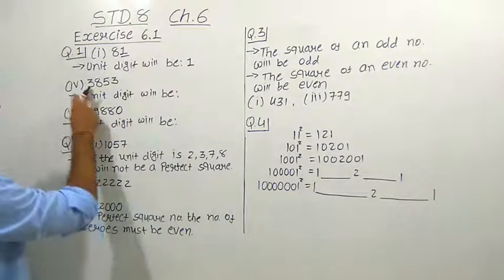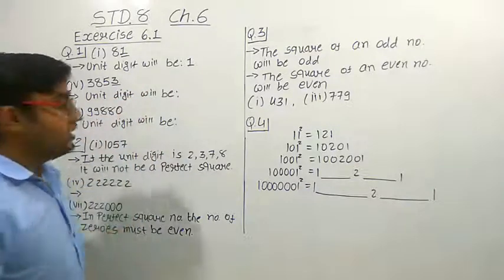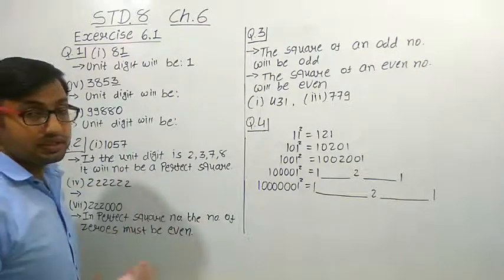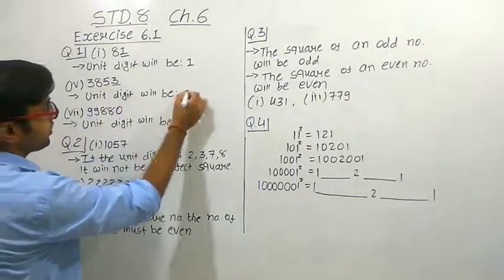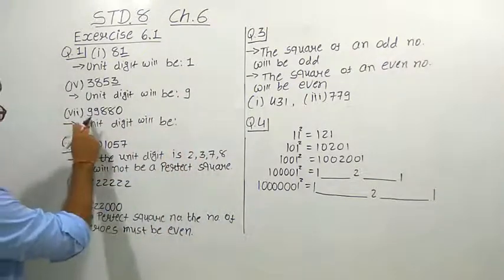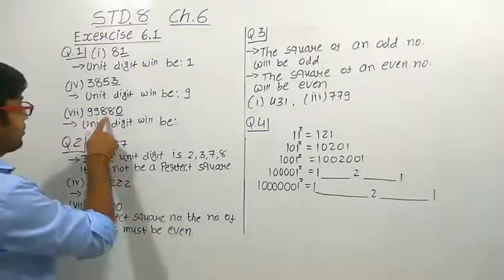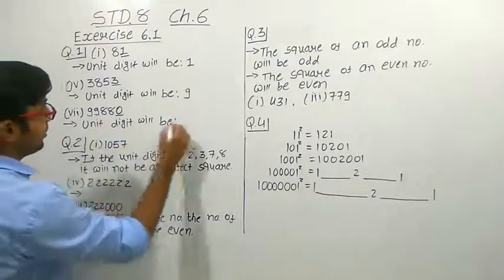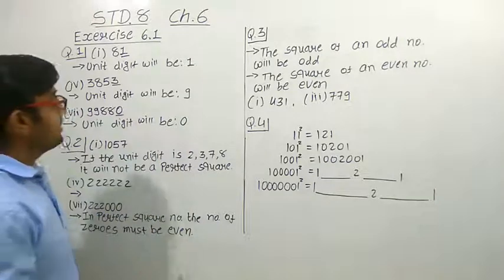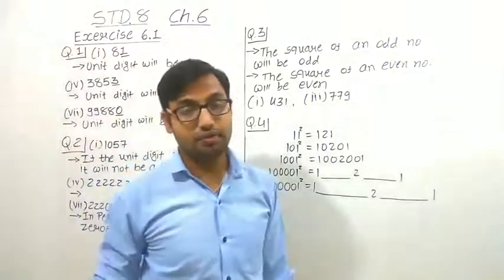Let us take one more example. If the number is 3853, notice the unit digit is 3. So when we make the square of this number, its unit place digit will be 3 squared, which is 9. So the unit place number we get is 9. Let us take one more example: 99880. Notice the unit digit is 0, and 0 squared is 0. So when we make the square of this number, the unit digit will be 0.